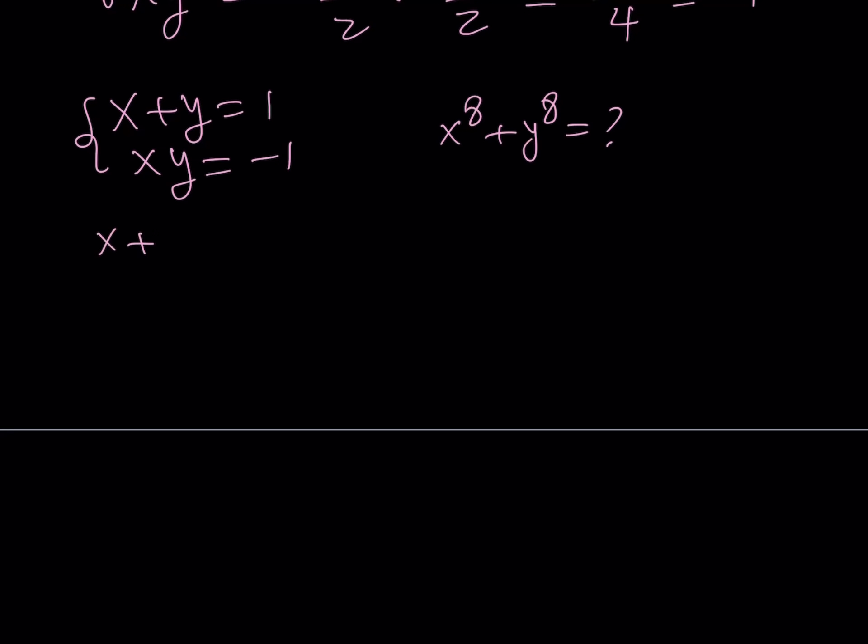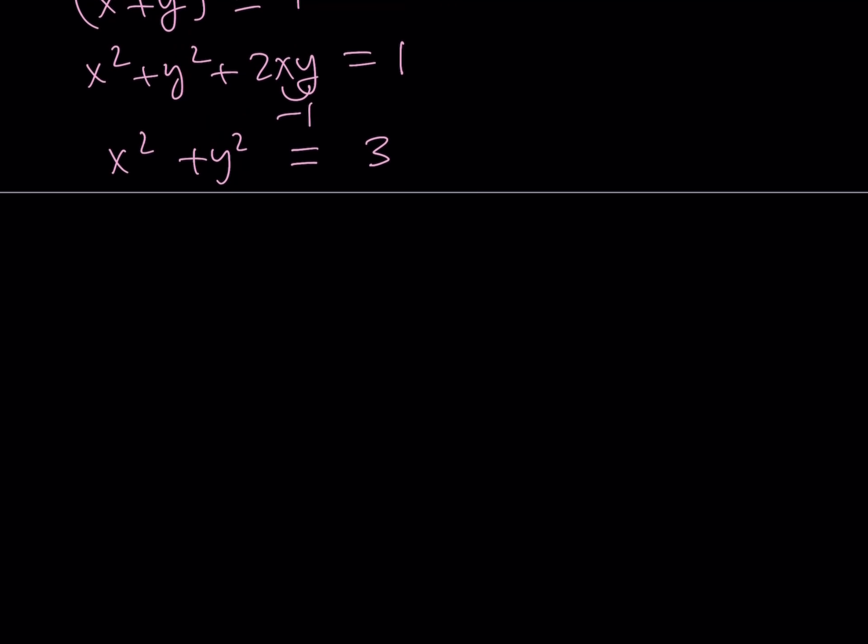We're going to take x plus y and square it. Obviously, when you square 1, you're going to get 1. And this is equal to x squared plus y squared plus 2xy. That should equal 1. Now, we know that xy is equal to negative 1, so this should give us negative 2. From here, x squared plus y squared becomes 1 plus 2, which is 3.